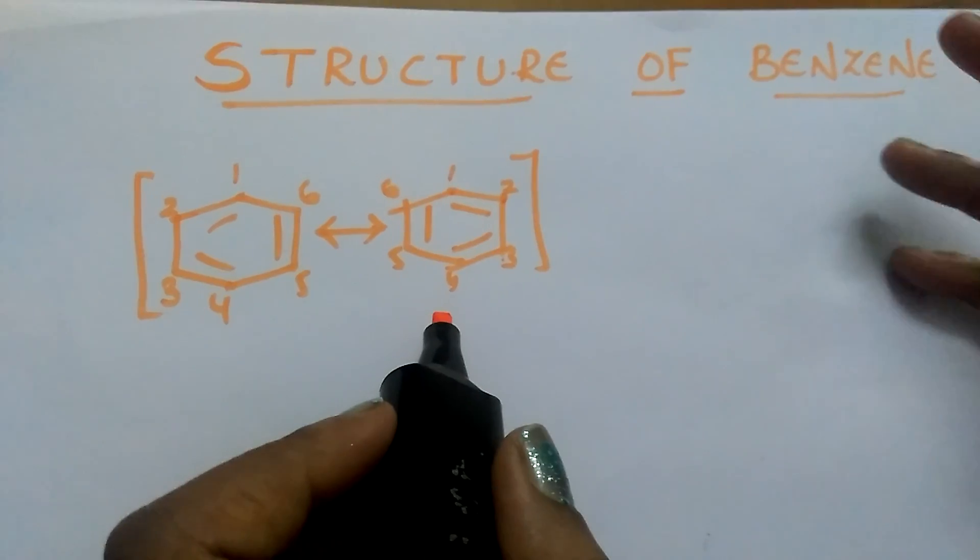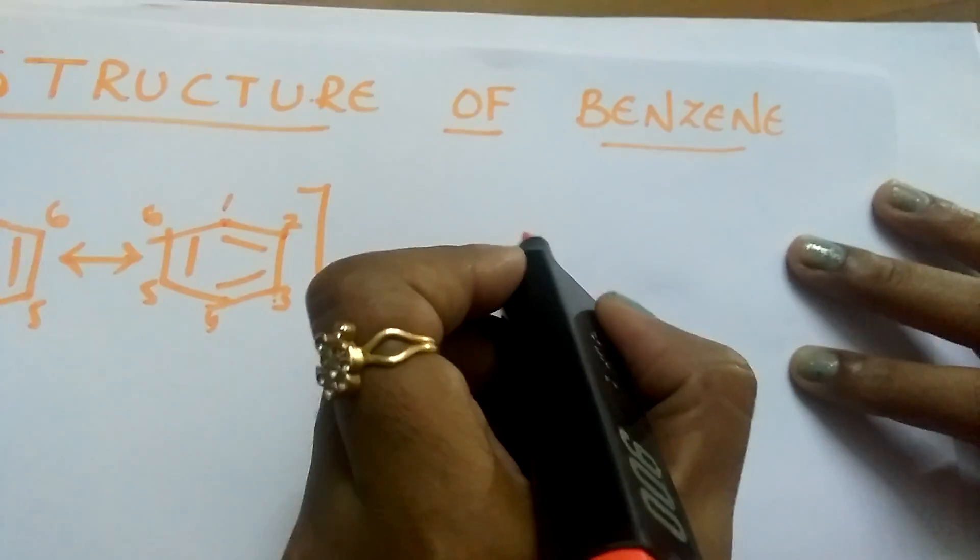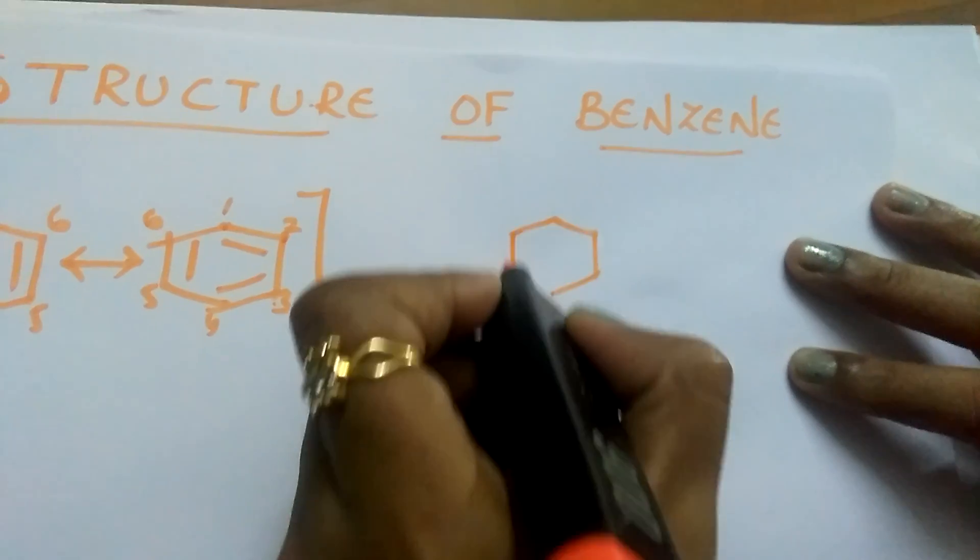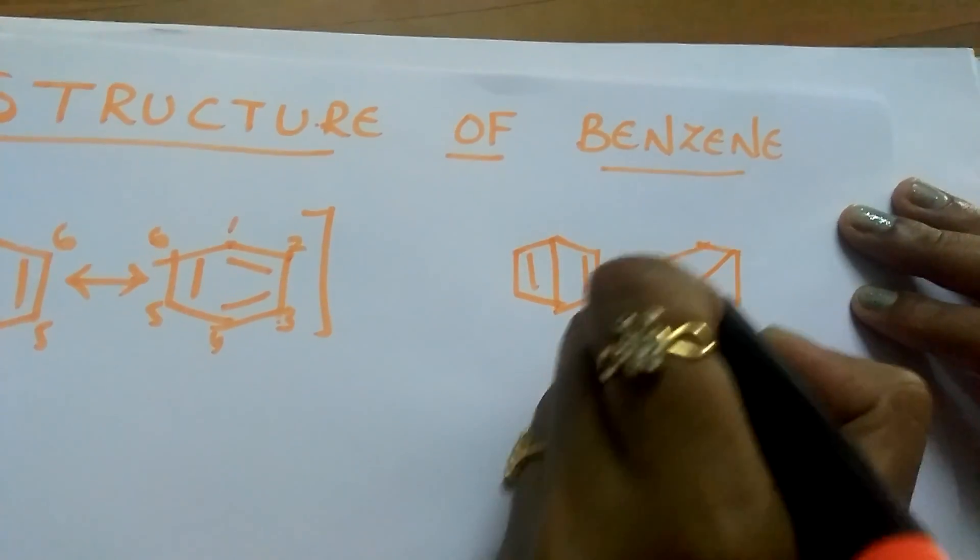Not only Kekule, so many other scientists tried. One of the scientists is Dewar. He gave these structures to the benzene.